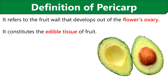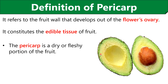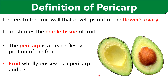Sometimes we get confused between the terms pericarp and fruit, but both the terms are quite different. Here I have taken the picture of avocado to make you differentiate both the terms. The pericarp is the dry or fleshy portion of the fruit, and the fruit is a combination of both the pericarp and the seed.